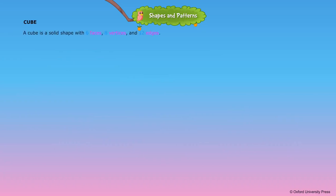Cube. A cube is a solid shape with six faces, eight vertices, and twelve edges. All the faces are of the same size.